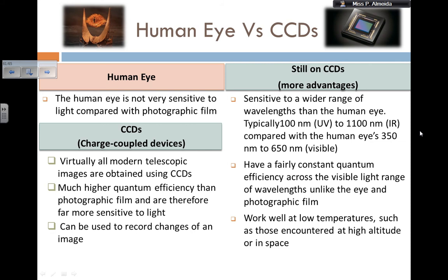CCDs also work well at low temperatures, such as those encountered at high altitudes or in space. This is good because at high altitude and in space is where many of the telescopes are located, so the CCDs work well there too.